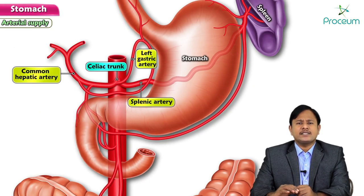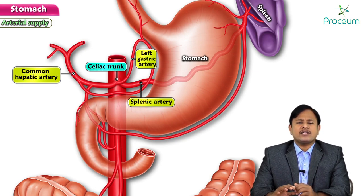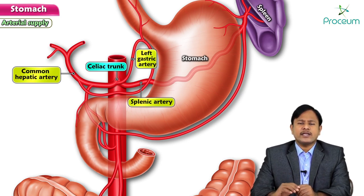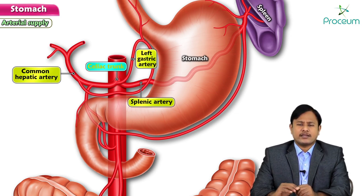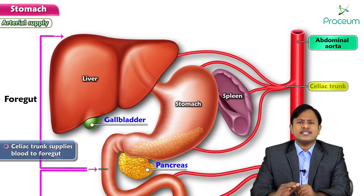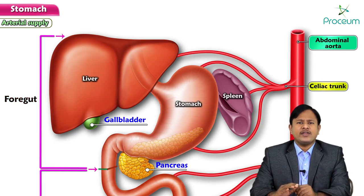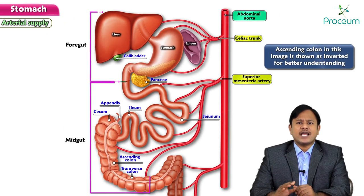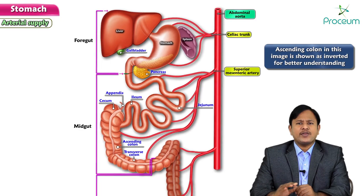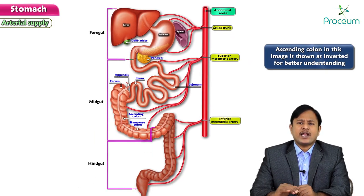The blood supply of the stomach has three main arteries and their branches, which are important. These arise mainly from the celiac trunk, which supplies the foregut. The artery of the midgut is the superior mesenteric artery, and the artery of the hindgut is the inferior mesenteric artery.